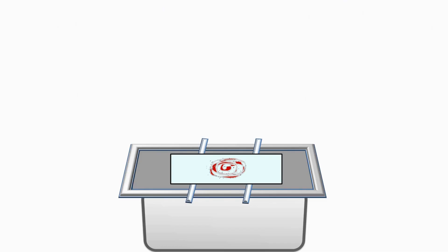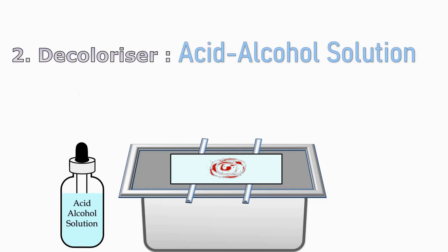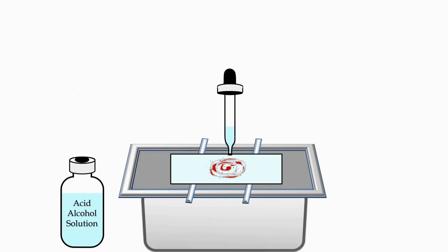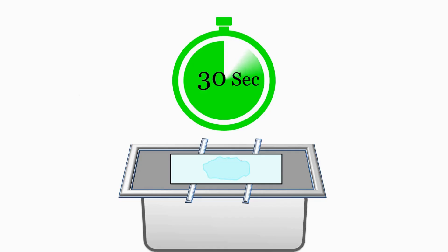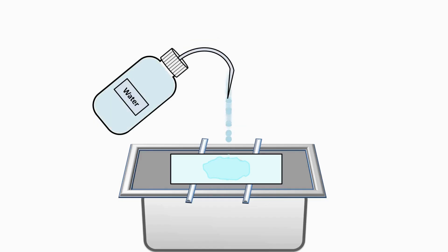The second reagent we are going to add is acid-alcohol solution, which acts as a decolorizer. Take out acid-alcohol solution using the dropper, flood the solution on the smear, and wait for 30 seconds. After 30 seconds, wash the excess stain from the slide with water.